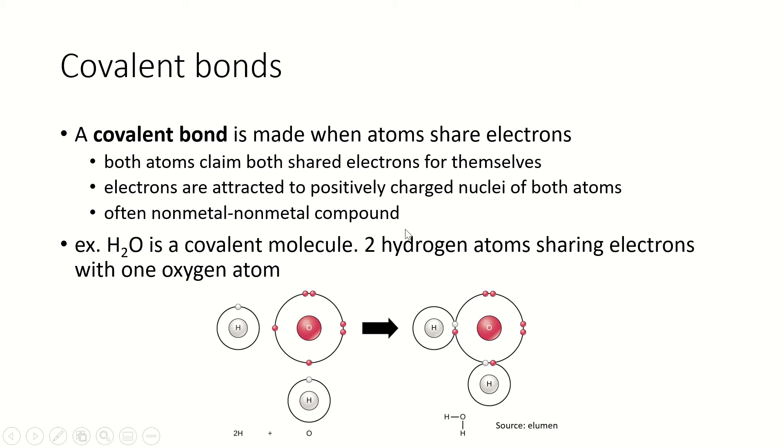So the electrons, because they are negatively charged and opposites attract, they are attracted to the protons, the positive charge inside the nucleus of the other atom. That's what holds the covalent bond together.